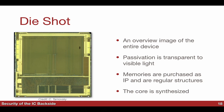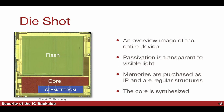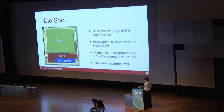Man fängt nicht mit kleinen Bildern an, sondern mit einer Übersicht. Hier kann man schon sehr viel sehen: den Flash-Speicher, den nicht-volatilen Speicher, den SRAM und den EPROM-Speicher unten. In rot sieht man den Core. Wie weiß ich, dass das der Core ist? Es ist genauso wie beim Kompilieren mit GCC — der Compiler schreibt Assembler ohne Optimierung, deshalb gibt es diese graue Area ohne Struktur. Sie wurde synthetisiert und optimiert — darum sieht man im Core unregelmäßige Strukturen.